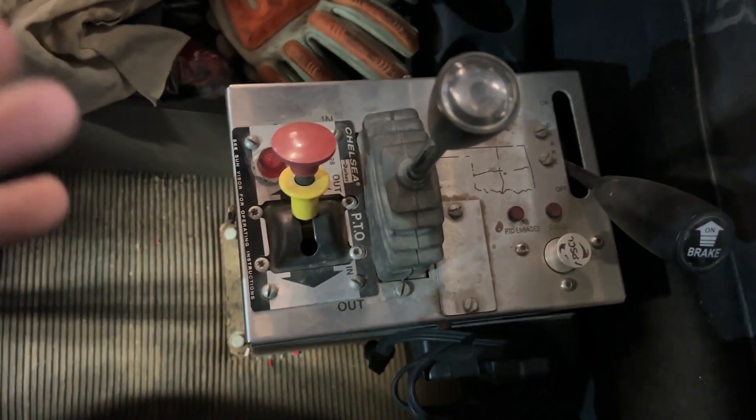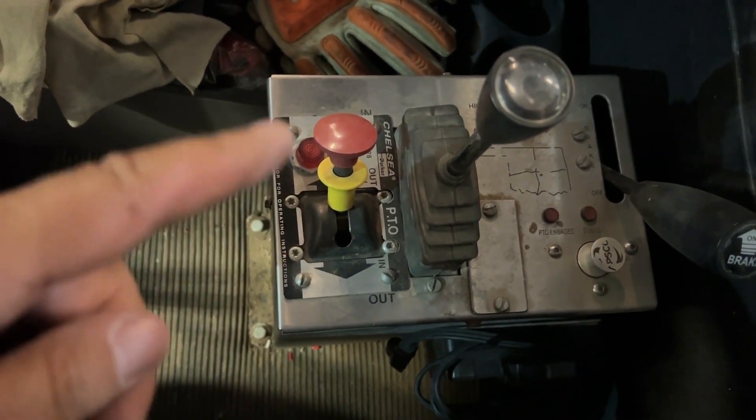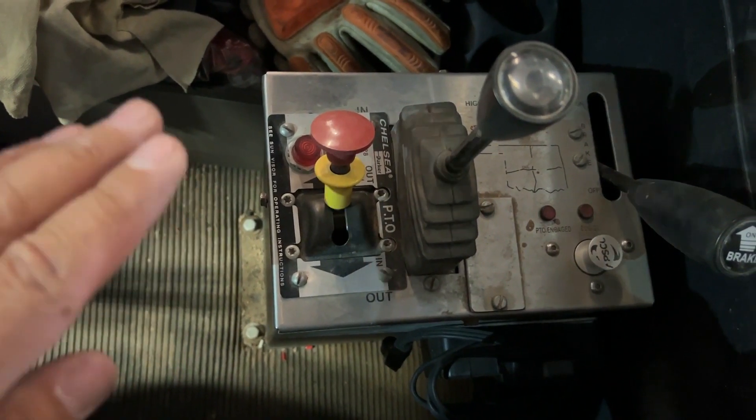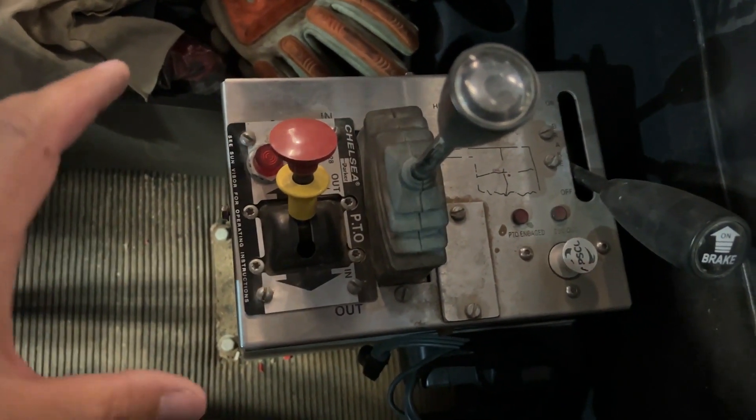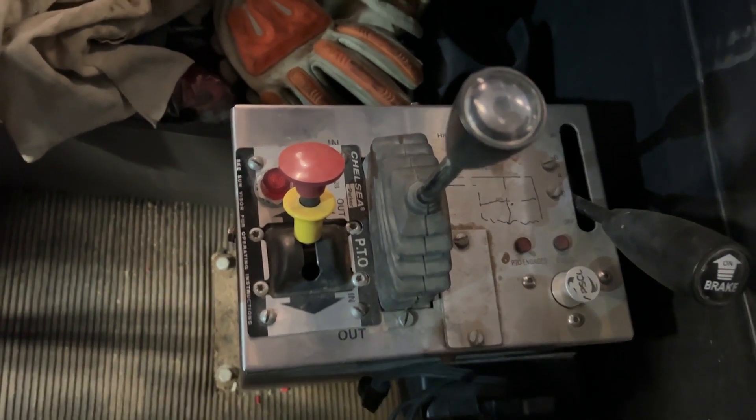And so that box will be included with the exception of the PTO control itself right here. We're going to take that out so that we can have the PTO control remain with the truck, but then the box and these other controls will be included with the winch, so you guys will have that when you go to operate it.